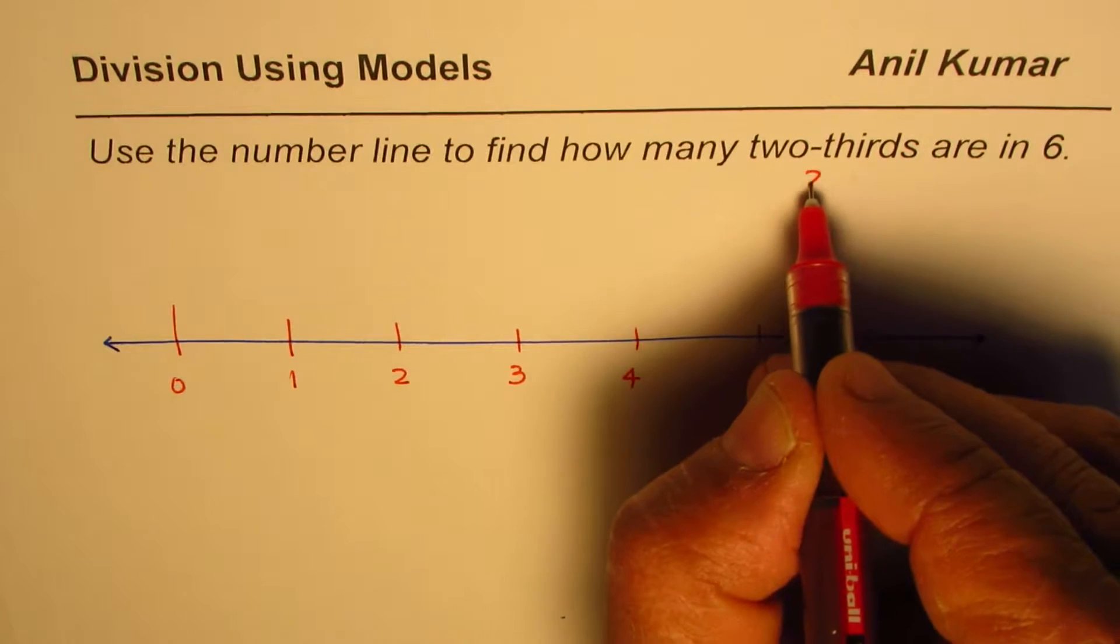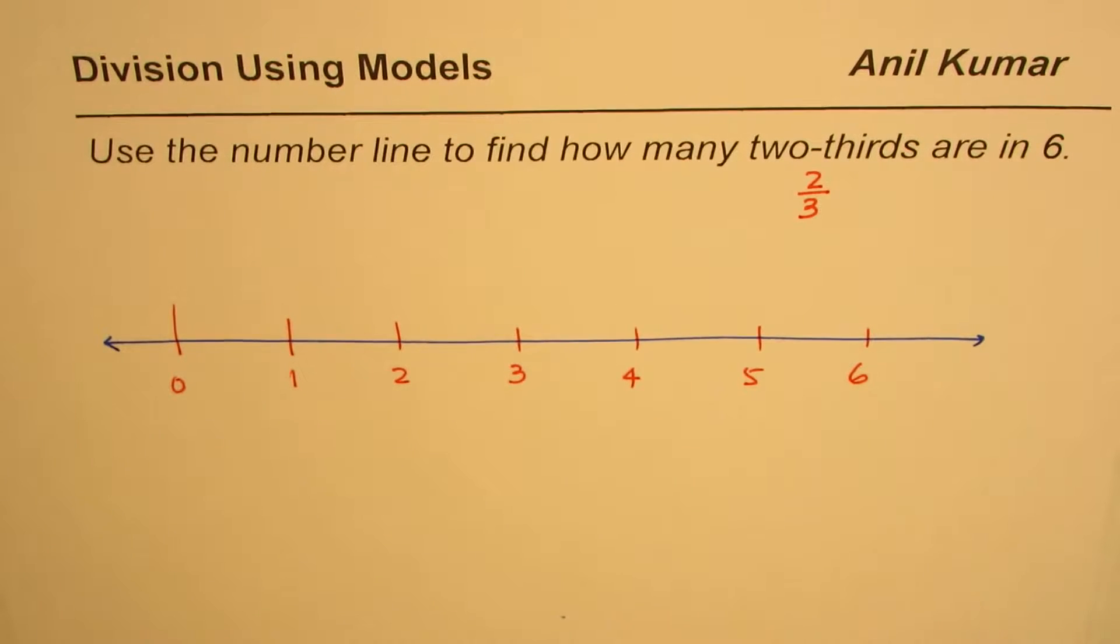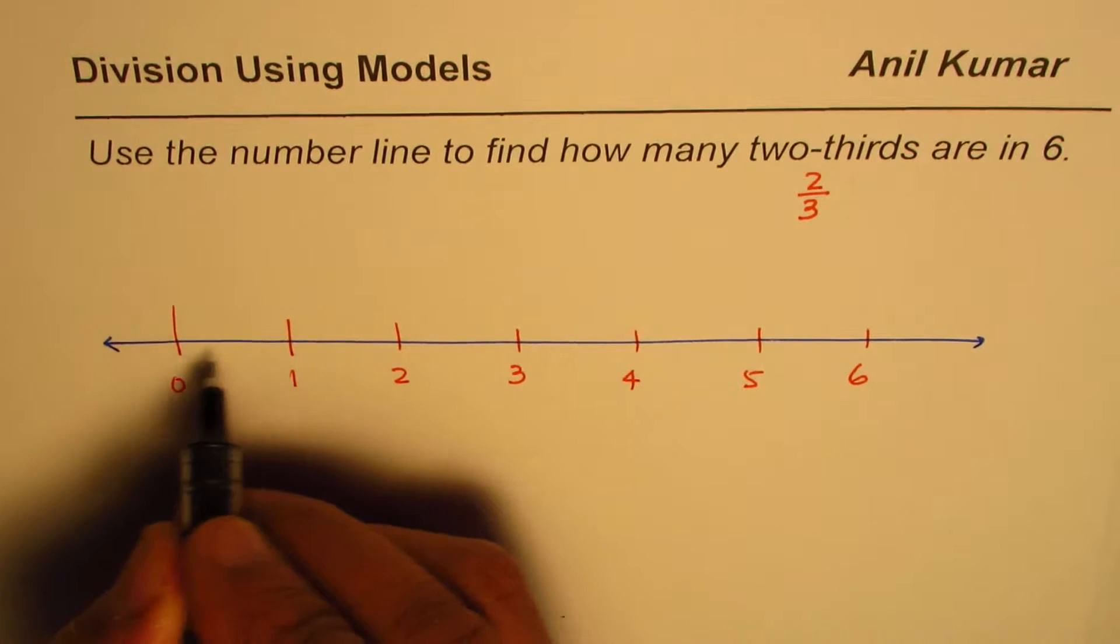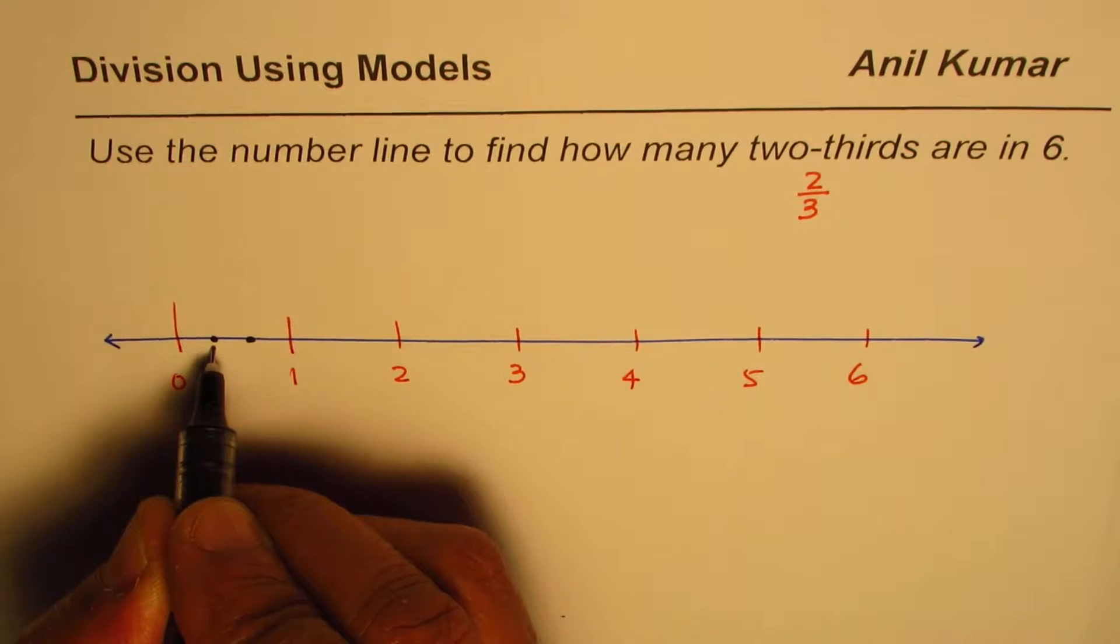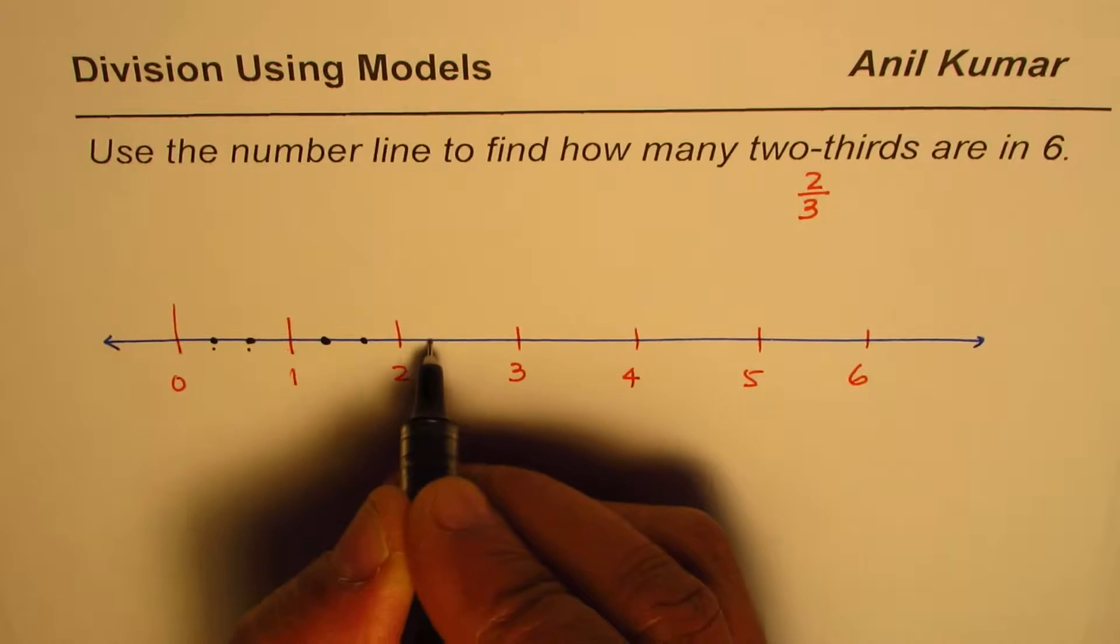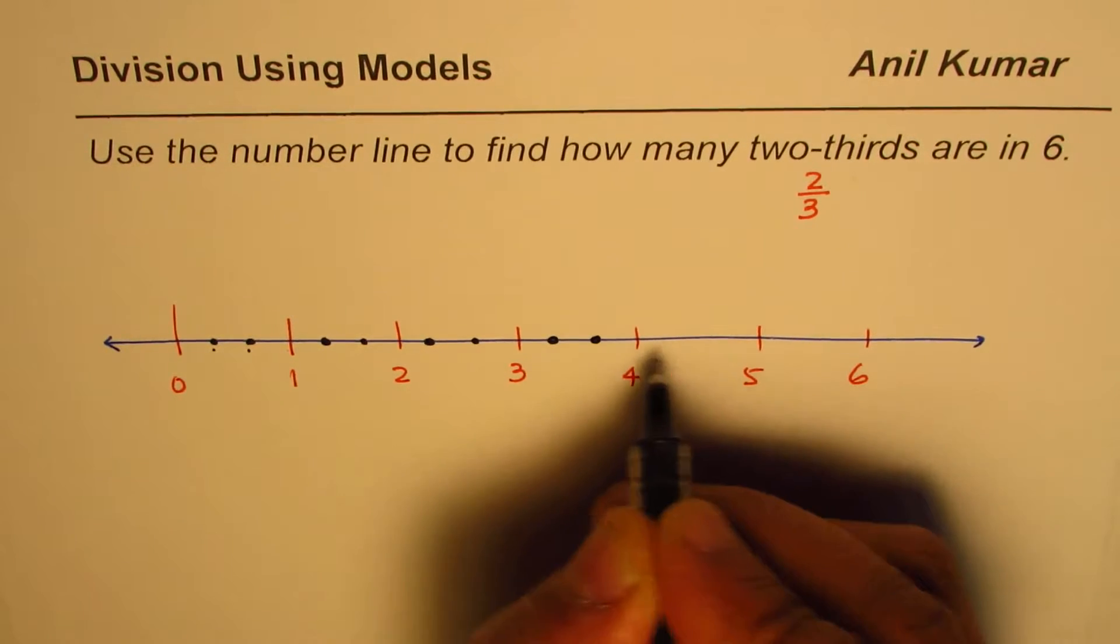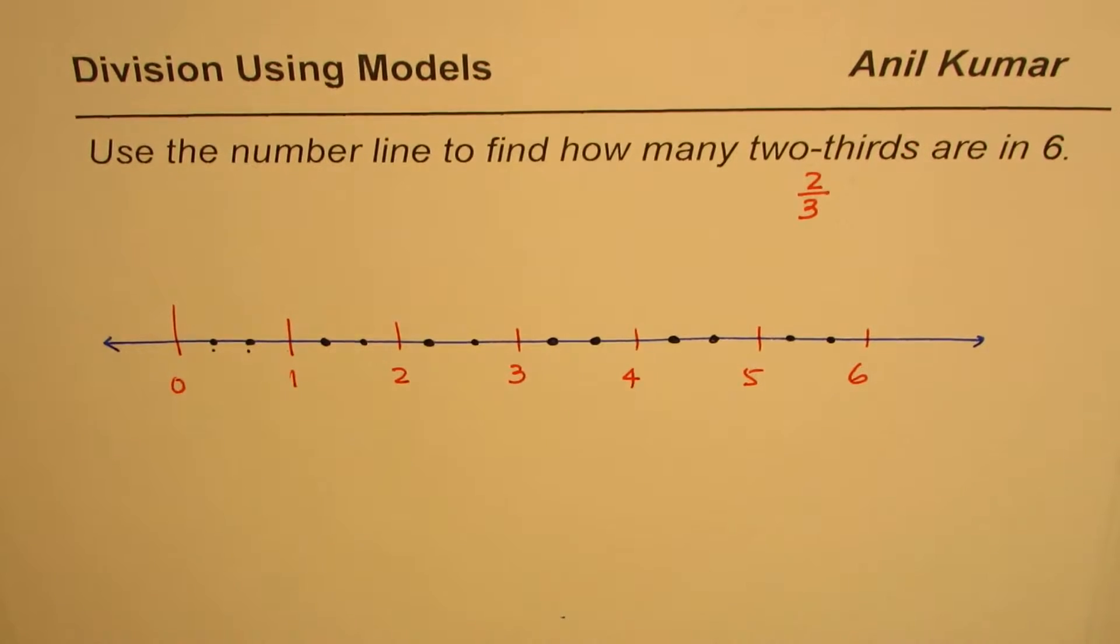Since we want two-thirds means two-thirds, how many two-thirds are in six? So what we will do here is we'll divide this number line each unit into three equal parts. So you could say these are my three equal parts. One, two, three. So each is one-third. One-third, two-third, three-third. That means one. So that is the division into three equal parts. My diagrams are kind of approximate, but they help you to understand the whole concept. That's the beauty.